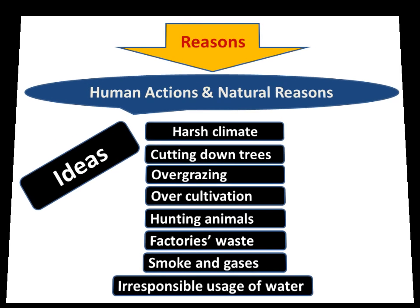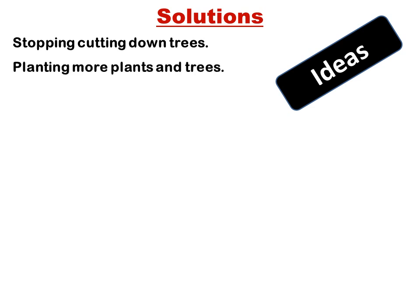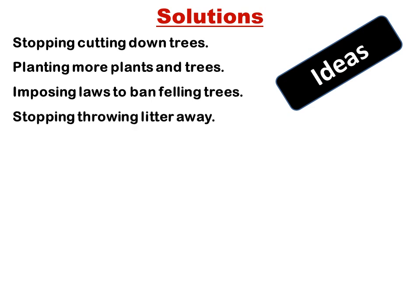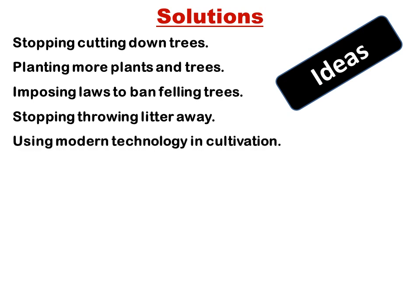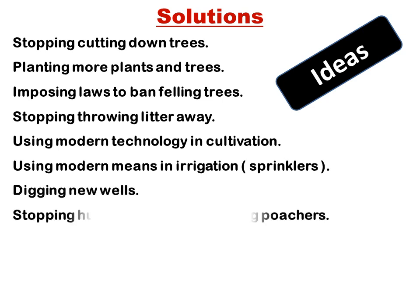Solutions include: stopping cutting down trees, planting more plants and trees, imposing laws to ban felling trees, stopping littering, using modern technology in cultivation, and using modern means of irrigation like sprinklers.